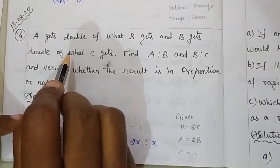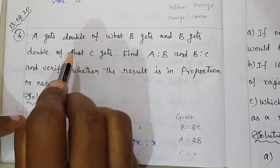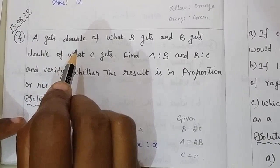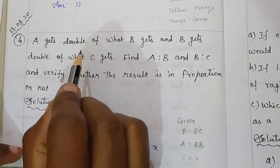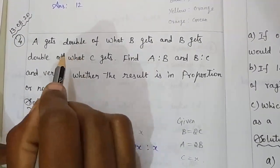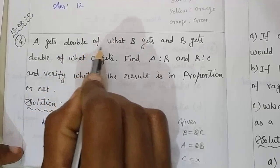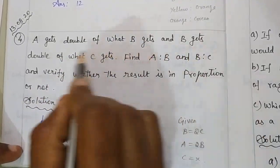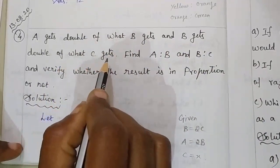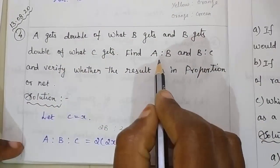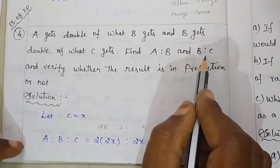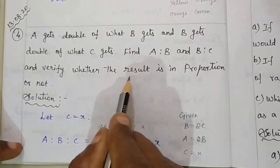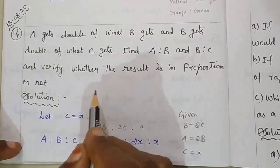Good morning students. Today we will see exercise 3.5 in chapter 3, fourth sum. A gets double of what B gets, and B gets double of what C gets. Find A is to B and B is to C, and verify whether the result is in proportion or not.